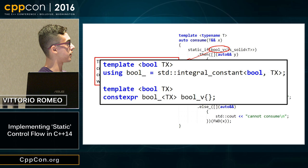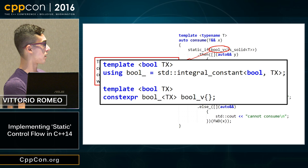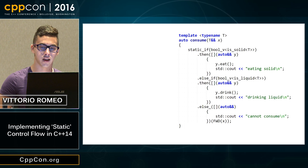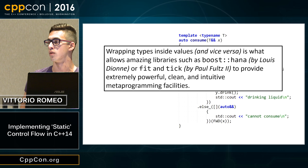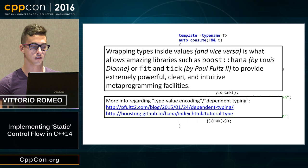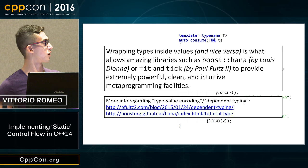bool_v is implemented as an integral constant plus a constexpr variable template so we don't need braces at the end. This idea of wrapping types inside values and vice versa is what allows amazing libraries like Boost.Hana or fit to create extremely powerful metaprogramming facilities. The slides are available on GitHub, so feel free to check the links later.